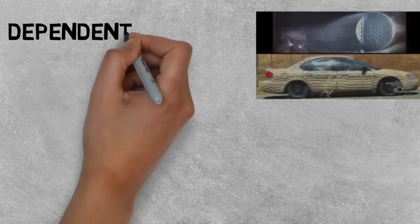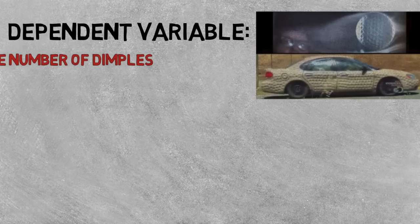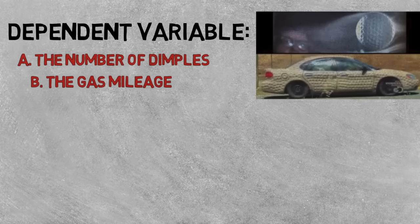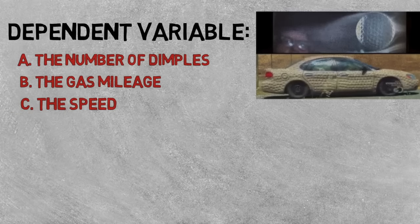Can you identify the dependent variable in the dimple car experiment? Was it the number of dimples in the car, the gas mileage of the car, or the speed the cars were driven at?